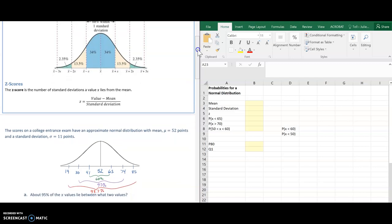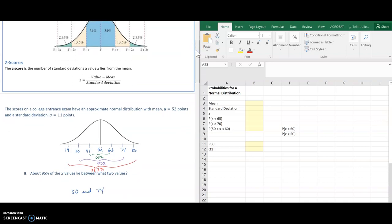So when I'm asked a question like about 95% of the x values lie between my two values, that's 30 and 74 because those are two standard deviations from the mean.